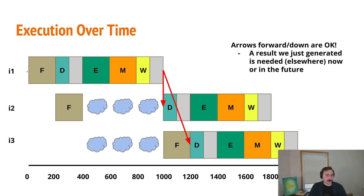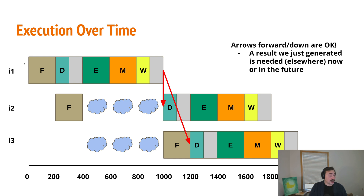Let's see what that looks like visually. For I1, we fetch the add instruction, decode it, read the registers, execute it to get the result of X2, go through the memory stage without doing anything, and finally reach the writeback stage where we update the register file. But I2, which needs to consume X2, gets to its fetch stage in the next cycle. It can't complete decode until three cycles later because decode is when we read the register file, and we can't read that register file until I1 has actually written the result there in the writeback stage.